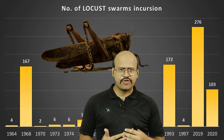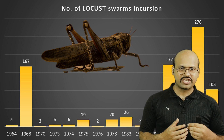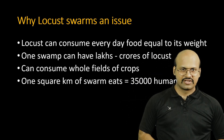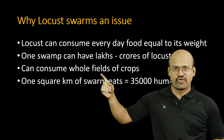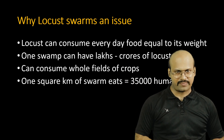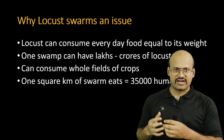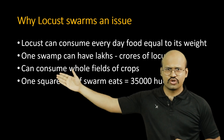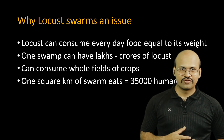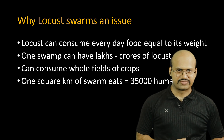Before looking into the causes, let's understand why this is such a big issue. Locusts can consume food every day equal to their own weight. When we consider the number of locusts in one single swarm — which can range from lakhs to crores — we can see how much food grain is lost in a single locust attack. They can consume whole fields of crops. One square kilometer of swarm can eat food grains equivalent to what 35,000 humans consume.